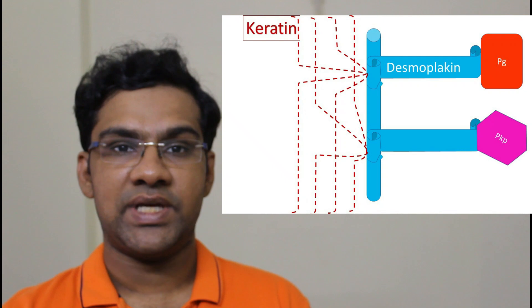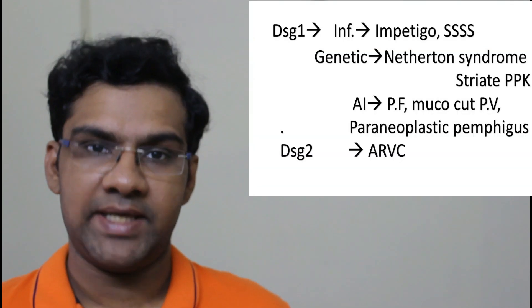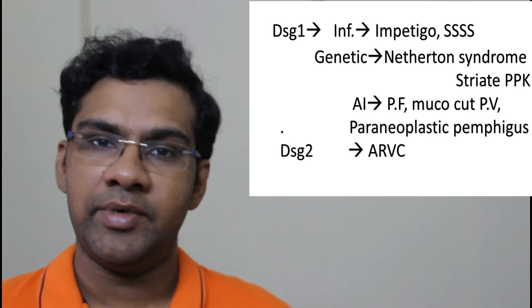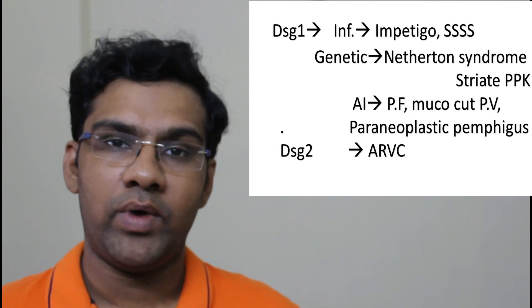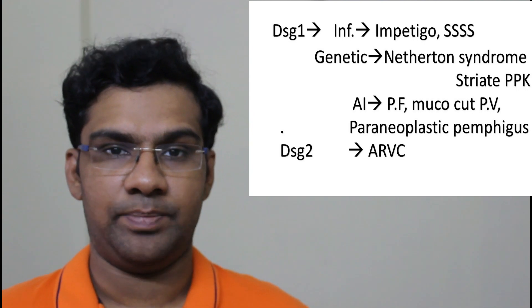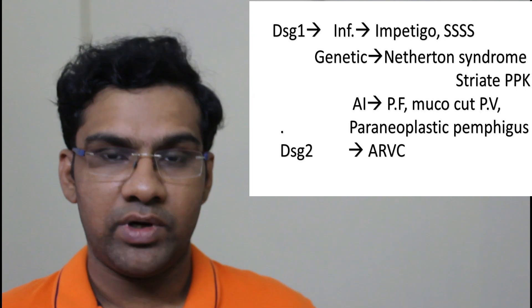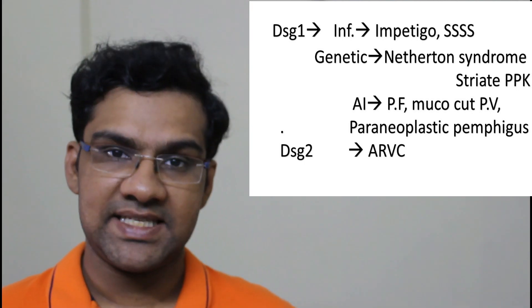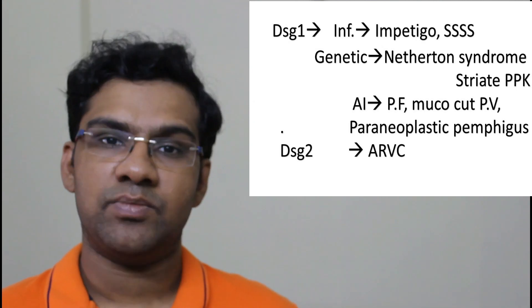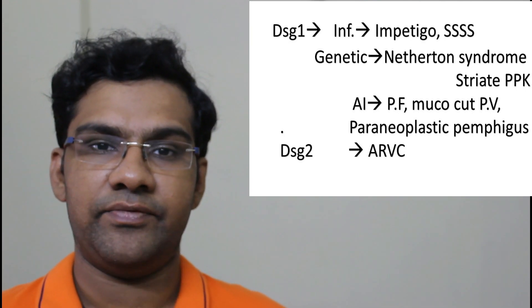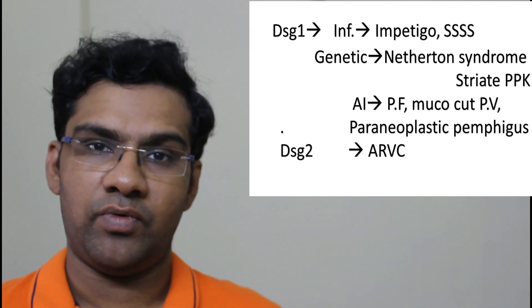Now let's discuss the applied aspects. For desmoglein 1, we divide the applied aspects into three categories: infections, genetic, and autoimmune diseases. Under infections, there are two conditions where desmoglein 1 is targeted: the first is bullous impetigo and the second is staphylococcal scalded skin syndrome (SSSS). In bullous impetigo, the exfoliative toxin produced by Staphylococcus cleaves the bond at desmoglein 1; similarly, during SSSS, the toxin also cleaves desmoglein.